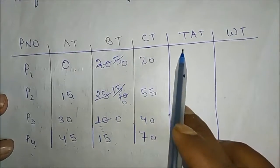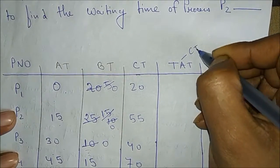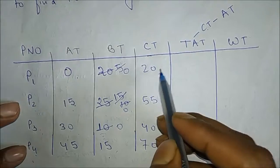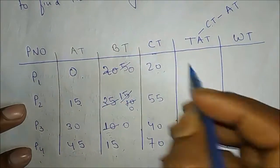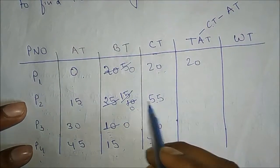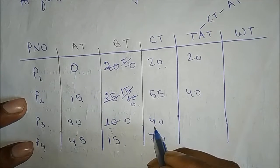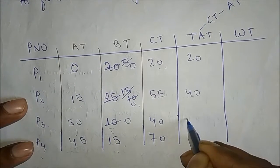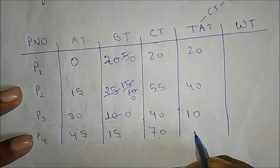To find the turnaround time, the formula is: Turnaround Time = Completion Time − Arrival Time. For P1: 20 − 0 = 20. For P2: 55 − 15 = 40. For P3: 40 − 30 = 10. For P4: 70 − 35 = 25.